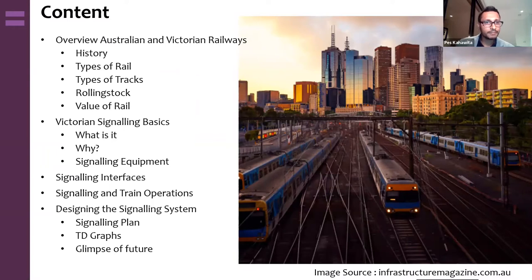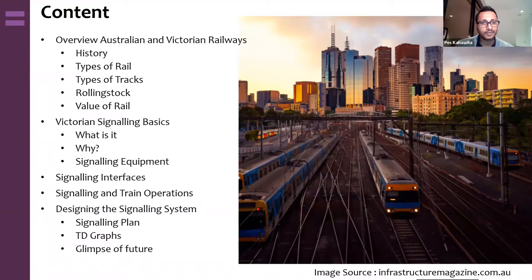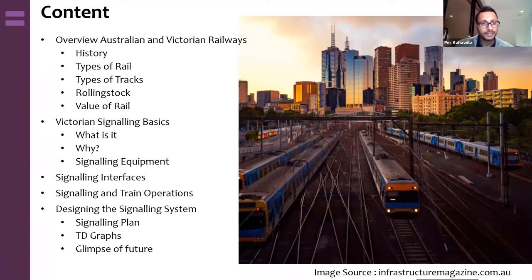Today I'll be speaking about a quick overview of the Australian context, the history of rail, types of rail and tracks, and the rolling stock we use, as well as the value rail brings to the country and society. I'll then go into signaling basics — what it is, why it exists, the components, and how it interfaces with the rest of the real world. I'll also cover how signaling and train operations link together, show a video explaining how it all works, describe a simple design for a rail section using a signaling plan and a time-distance graph, and give an idea of what the future may look like using a current project.